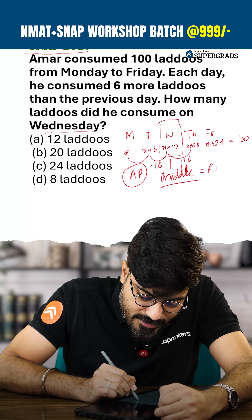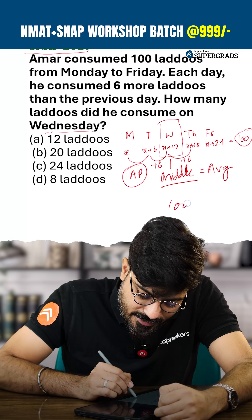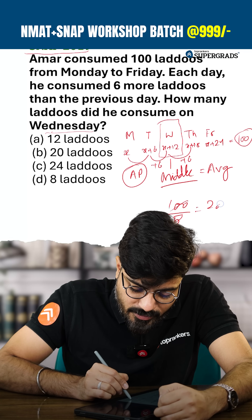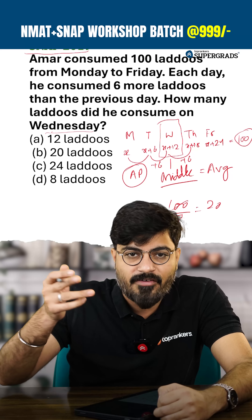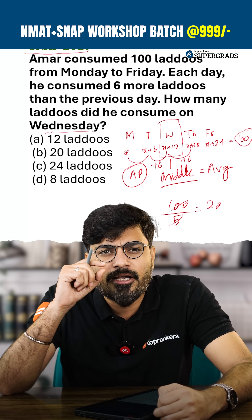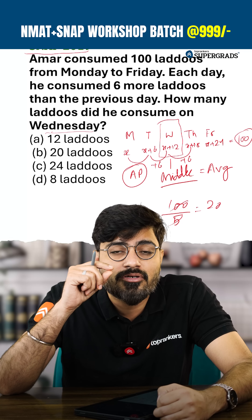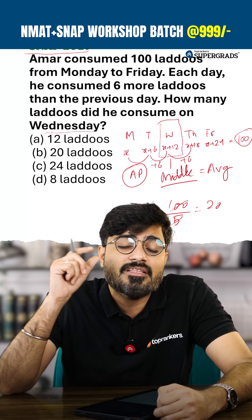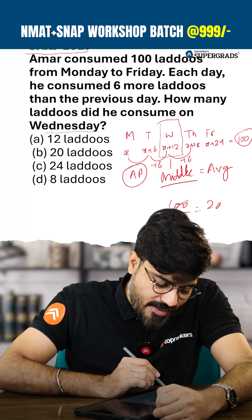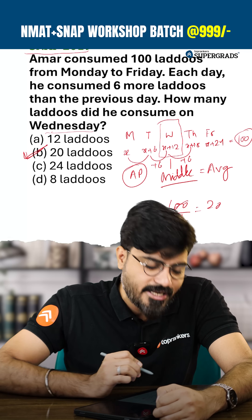the middle term is always equal to the average. Since there are 100 ladoos consumed divided by 5 days, the answer comes out to be 20. You need not solve for 5x and the full sum — that takes too much time. Whenever you're talking about the middle observation and the terms are in AP, it will always equal the average. The answer is B — 20 ladoos. Thank you.